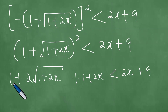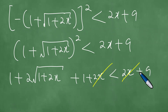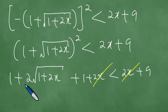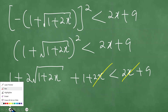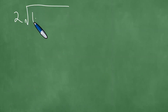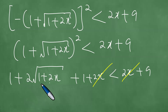So now we have 1 plus 1, which is 2. We can cross out the 2x on both sides of the inequality since it appears on both sides. So now we have 2 plus 2 times the square root of 1 plus 2x less than 9, which simplifies to 2 times the square root of 1 plus 2x is less than 7, since 9 minus 2 is 7.